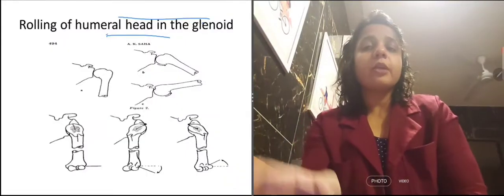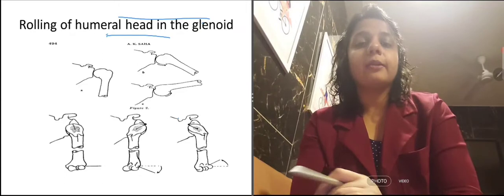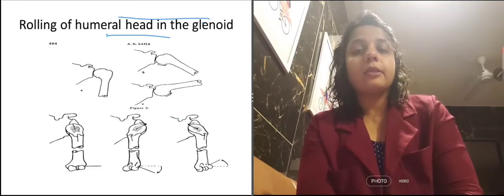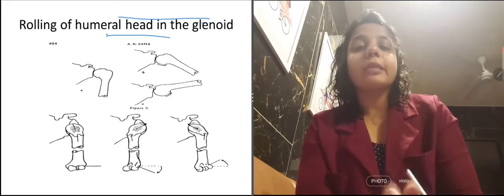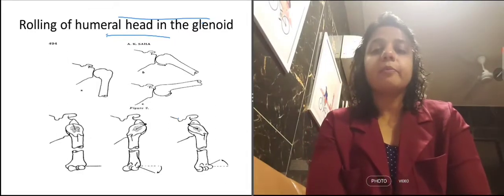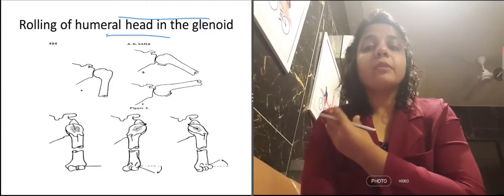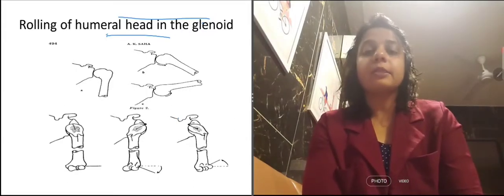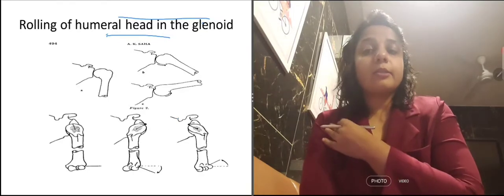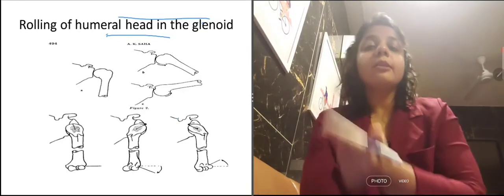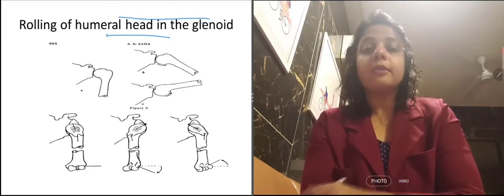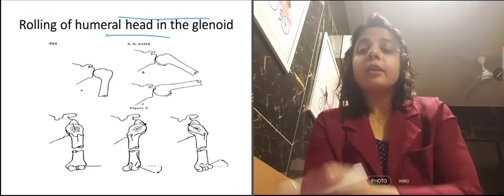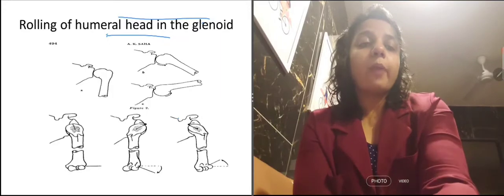This picture is about the rolling of the humeral head in the glenoid. Every muscle is providing stability — the rotator cuff is actually trying to provide stability. We have the subscapularis, which is the anterior muscle and anterior stabilizer. Infraspinatus and teres minor are the posterior stabilizers. And supraspinatus is the vertical stabilizer. These muscles are providing stability.